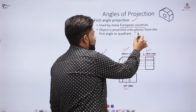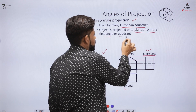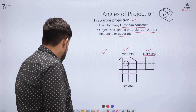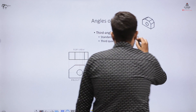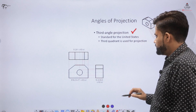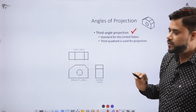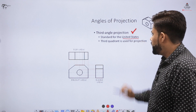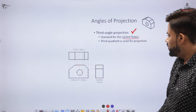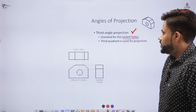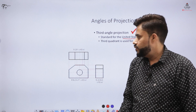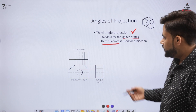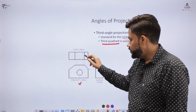Here you can see that the objects are placed in the first quadrant — that is, first angle projection. In the case of the third angle projection, you keep the object in the third quadrant. This is the standard used by countries like the United States for representing orthographic views. When we keep the object in the third quadrant, the front view is below the top view. So you have the top view here and the front view below the top view.